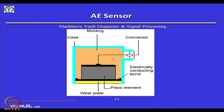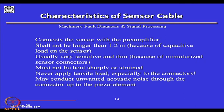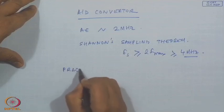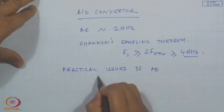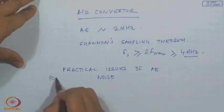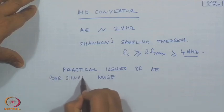An acoustic emission sensor has a piezoelectric crystal which is sensitive to surface waves coming through the structure. These will give a signal corresponding to the stress waves. Because these are all capacitance-based, we have to be very careful regarding noise, and poor signal-to-noise ratio is one of the important practical issues of acoustic emission.